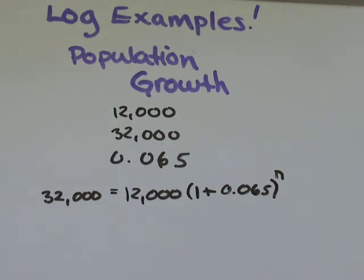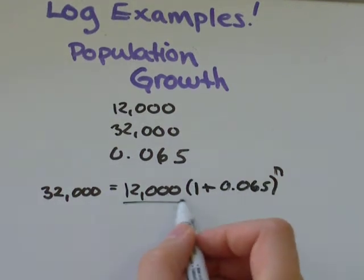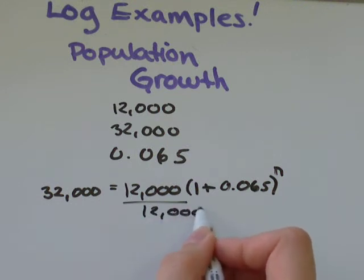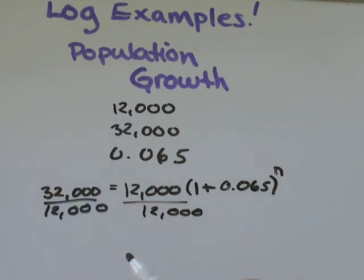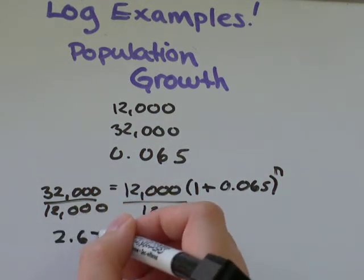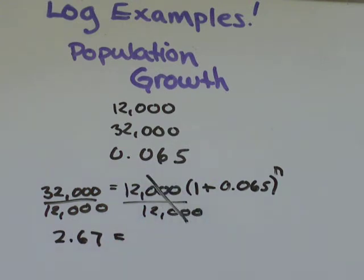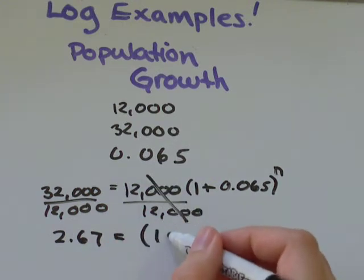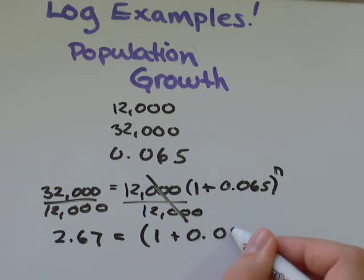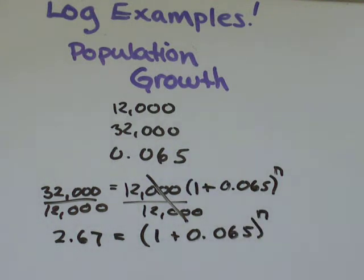The first thing I'm going to do is divide both sides by 12,000 and 32,000 divided by 12,000 is about 2.67. Those will cross out and I'll be left with 1.065 to the exponent of n.